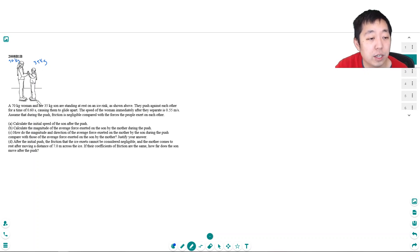They push against each other for a time of 0.6 seconds, causing them to glide apart. The speed of the woman immediately after they separate is 0.55 meters per second. Assume that during the push, friction is negligible compared to the forces exerted on each other. Calculate the initial speed of the son after the push.